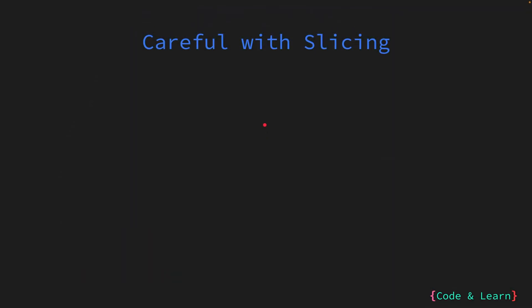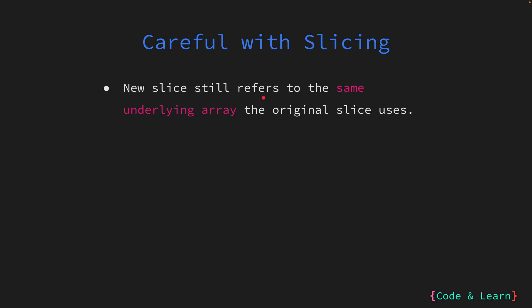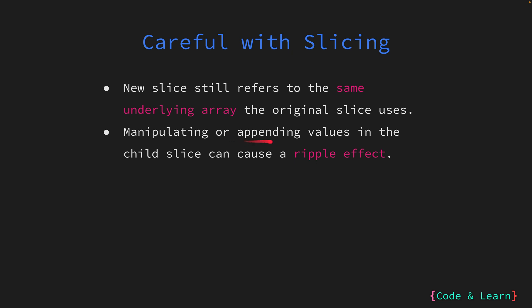Slice expression is useful when you want to process a range of indices from a given slice or move values from an array to a slice. But you should be very careful when slicing. Slices are wrappers around arrays and don't store data themselves but use an underlying array. When you create a new slice with the slice expression, the new slice does not get a new underlying array but keeps using the underlying array of the source slice. Both the new and the old slice share the underlying array, so changes made to one slice will be visible through the other. Manipulating or appending values into a child slice will have a ripple effect.